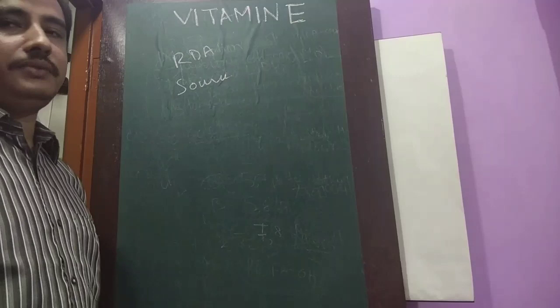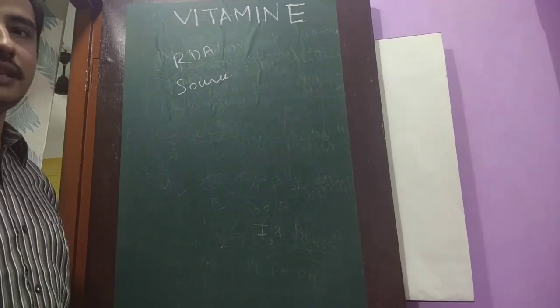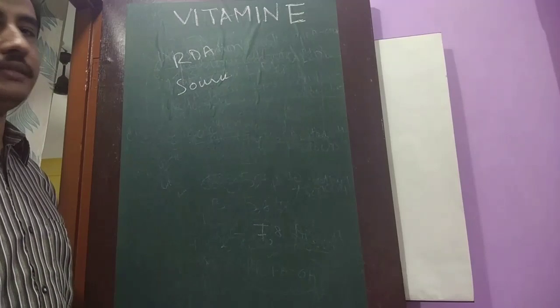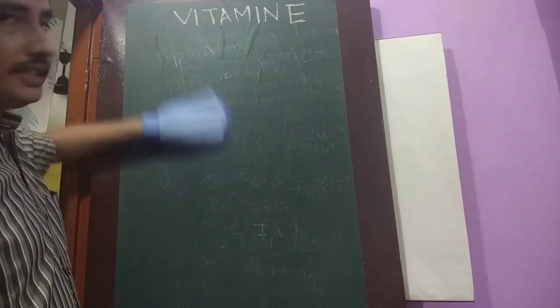Next is the source. It is mainly found in the vegetable oils like peanut oil, sunflower oil, corn oil. And meat, butter, eggs also contain vitamin E.